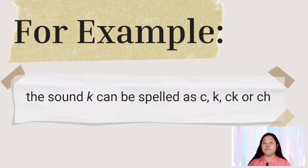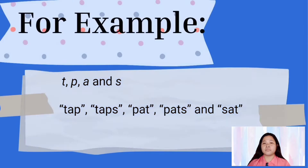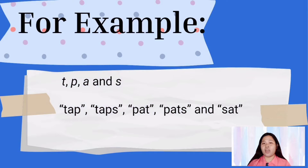Teaching children to blend the sounds of letters together helps them decode unfamiliar or unknown words by sounding them out. For example, when a child is taught the sounds for the letters T, P, A, and S, they can start to build up the words tap, taps, pat, pats, and sats.